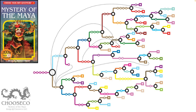Not all of these adventures are as simple as the previous one. The Mystery of the Maya, for example, has many, many more possible endings — 39 in total — many branching decisions that lead to those, and the possibility of returning to the start at various points for looping paths: a directed cyclic graph, if you will.